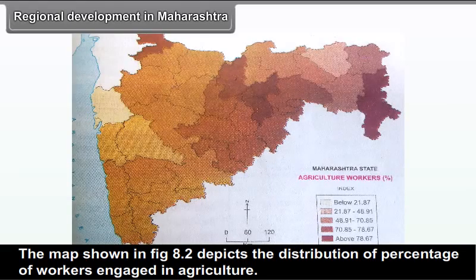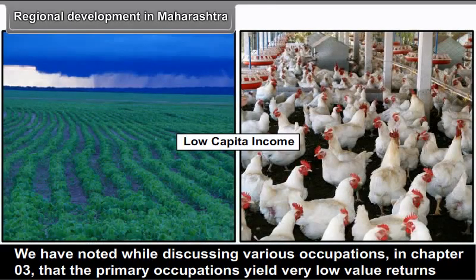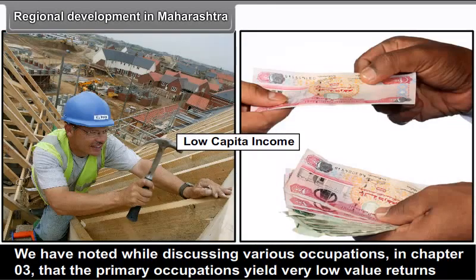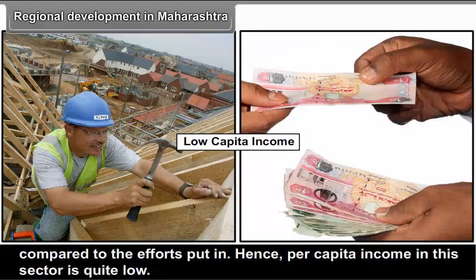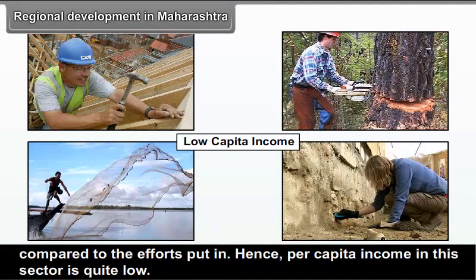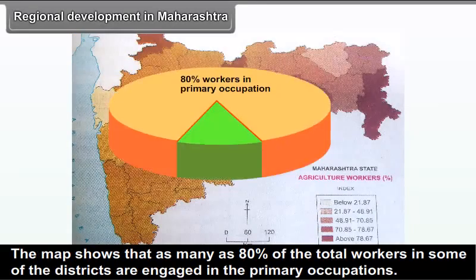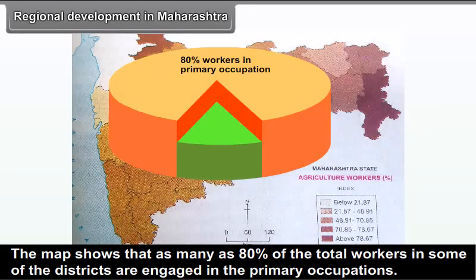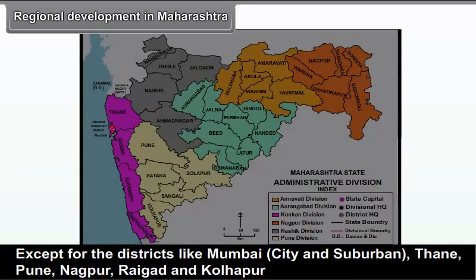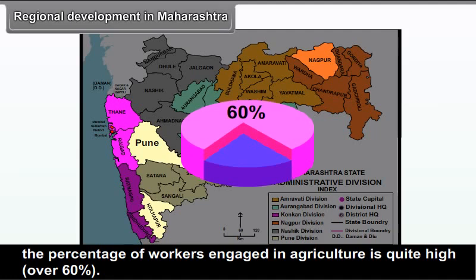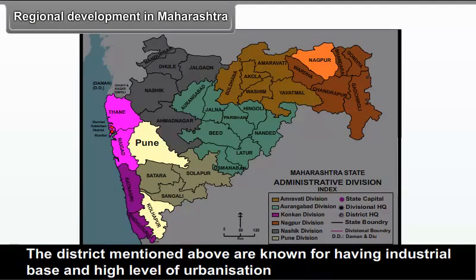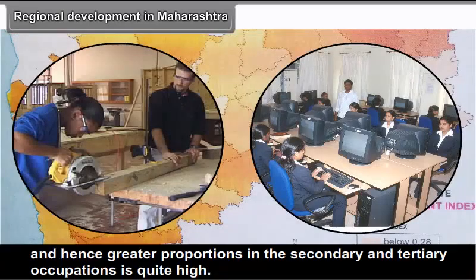The map in figure 8.2 depicts the distribution of the percentage of workers engaged in agriculture. Primary occupations yield very low value returns compared to the efforts put in; hence, per capita income in this sector is quite low. The map shows that as many as 80% of workers in some districts are engaged in primary occupations. Except for districts like Mumbai city and suburban, Thane, Pune, Nagpur, Raigad and Kolhapur — known for their industrial base and high level of urbanization — the percentage of workers engaged in agriculture is quite high, over 60%, with greater proportions in secondary and tertiary occupations in those urban-industrial districts.